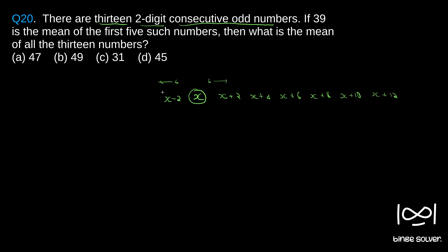Similarly, six numbers to the left of x: x−2, x−4, x−6, x−8, x−10, x−12. So we have written down all 13 numbers.